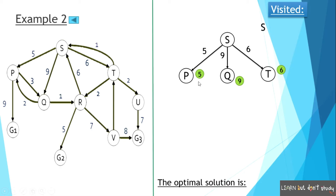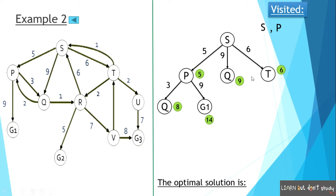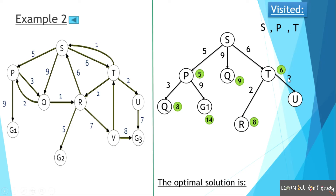So if we have node P with cost 5, we can visit P. Now from P, the paths lead to Q and G1. Q is 5 plus 3, which is 8. G1 is 5 plus 9, which is 14. Now looking at the weightage: Q is 8, G1 is 14, original Q is 9, and T is 6. The lowest total cost is T at 6. So we visit T. From T, the paths lead to R and U. R is 6 plus 2, which is 8. U is also 6 plus 2, which is 8. The lowest node is now unvisited.